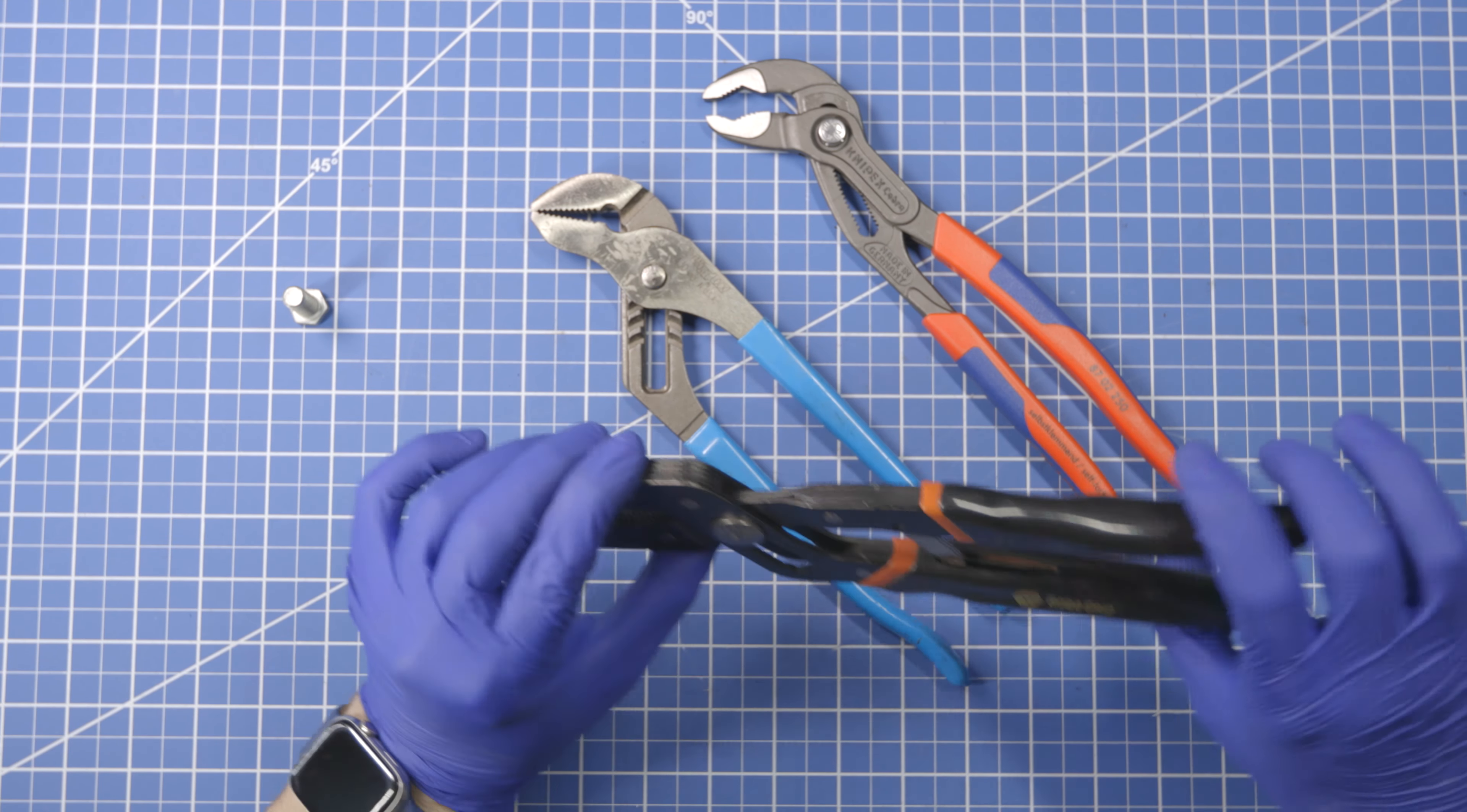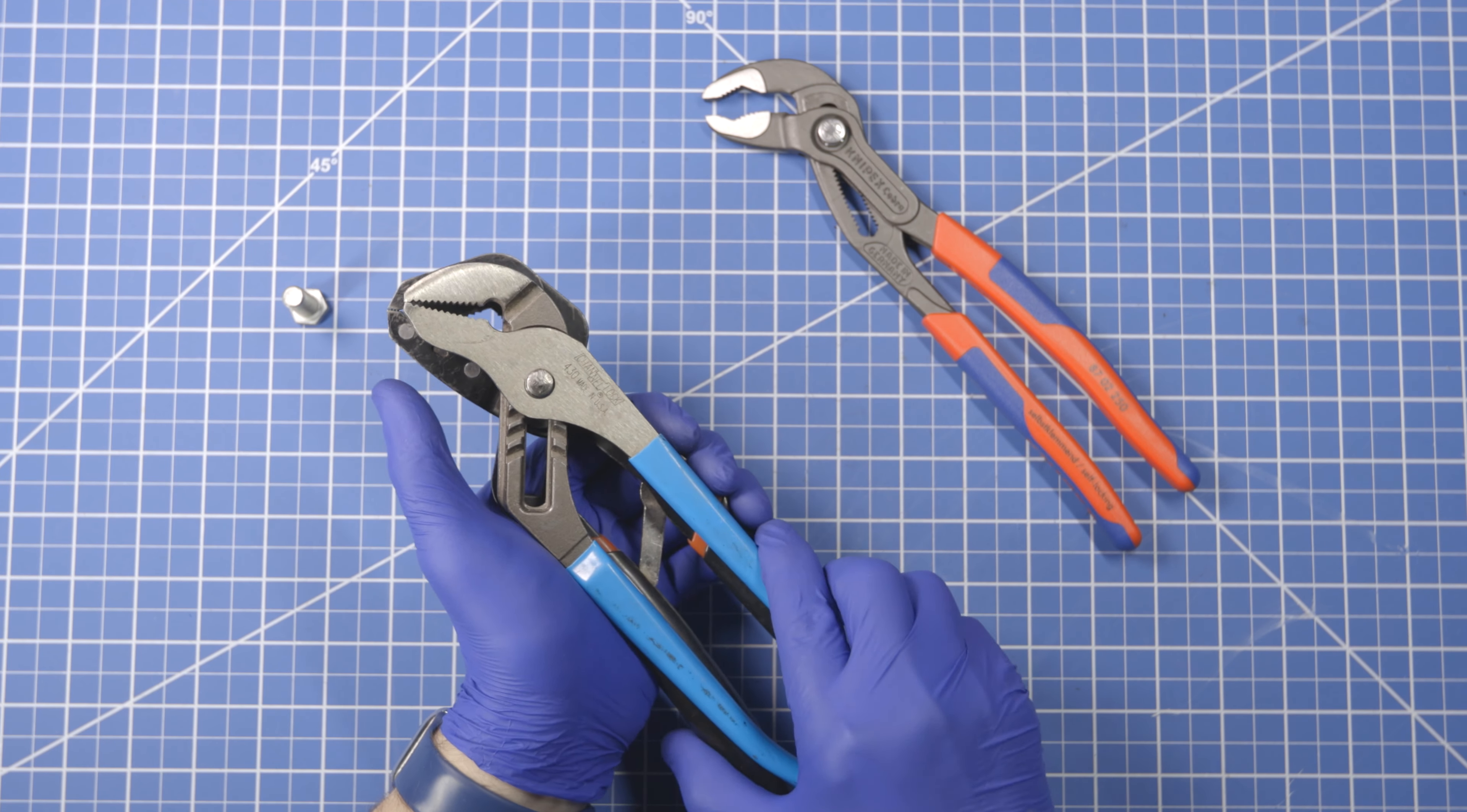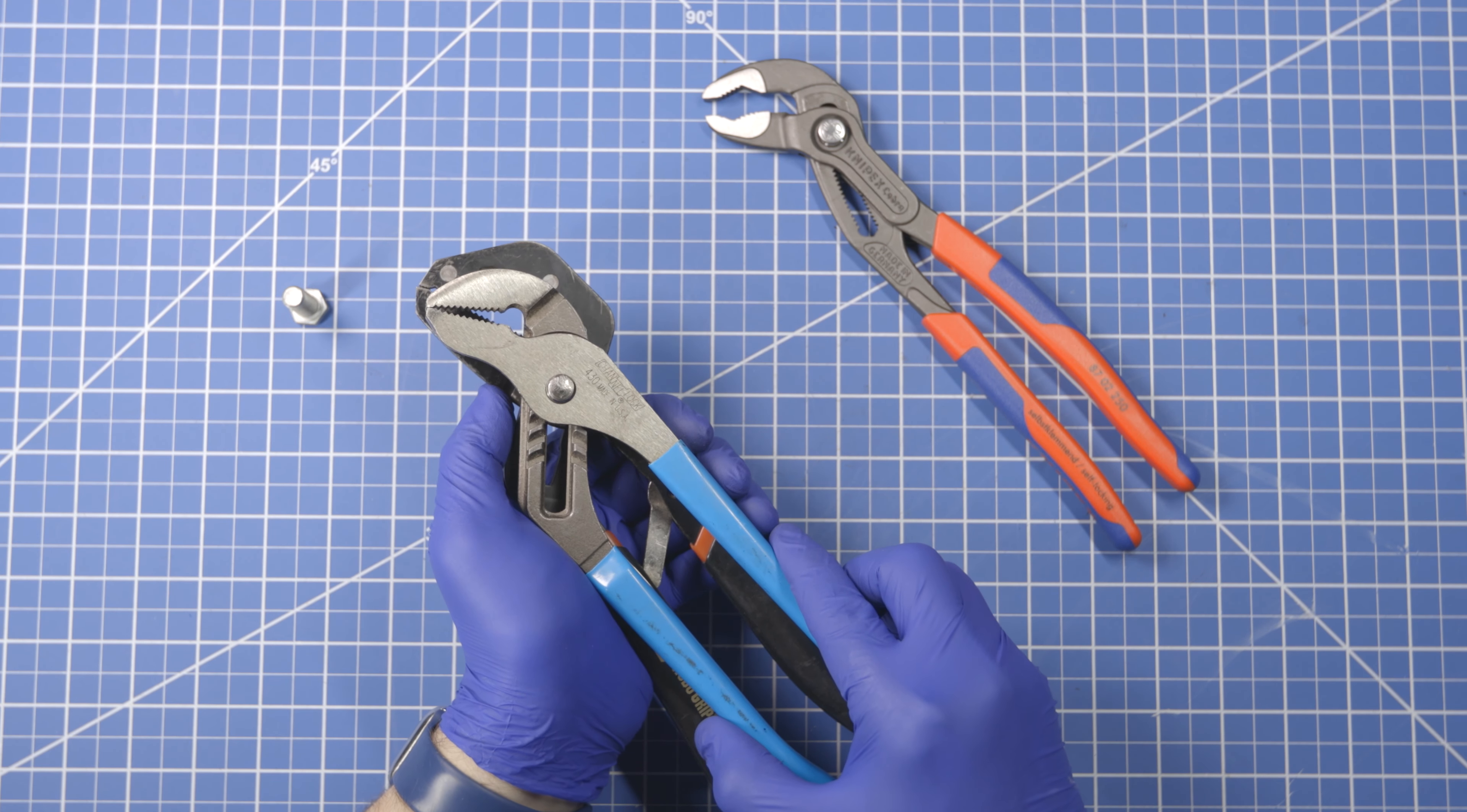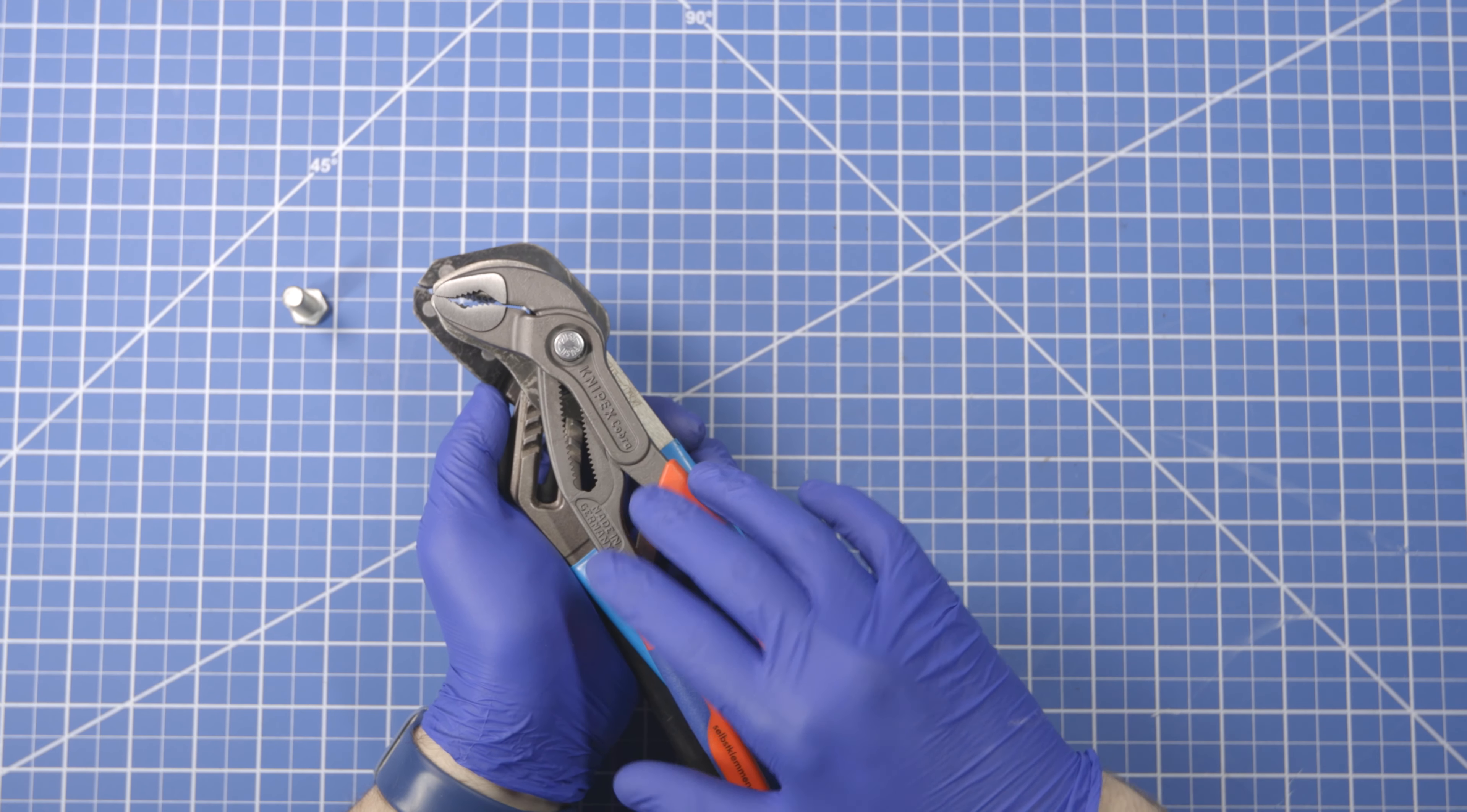Yeah, oh last thing. Head size. So as you can see the head of this thing is quite big compared to channel lock, much bigger. And then let's put this all the way at the bottom compared to that, even bit smaller. The Cobra is even smaller.